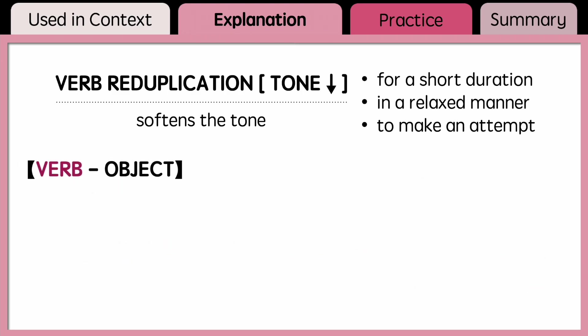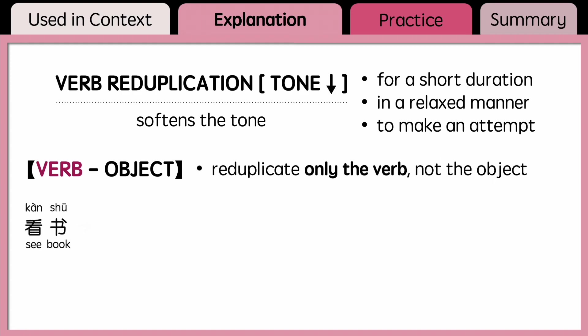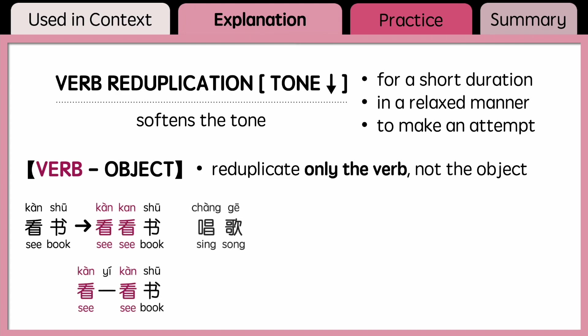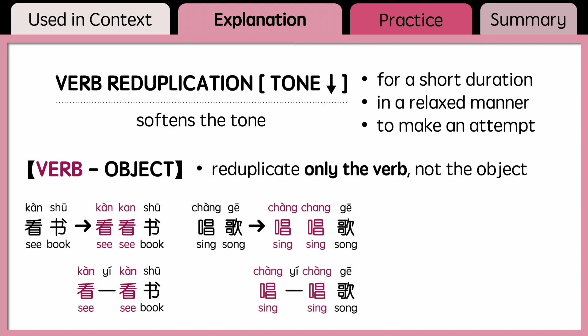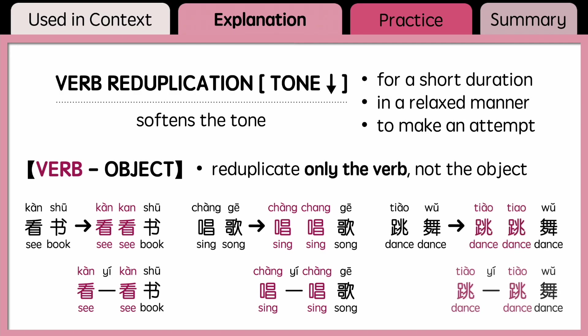This also applies to verb-object compounds. Since they usually have one-syllable verbs, make sure to reduplicate only the verb part, not the object part. For example, 看书 becomes 看看书 or 看一看书. 唱歌 becomes 唱唱歌 or 唱一唱歌. If the action is completed, you can add 了 in between the two reduplicated verb parts and say 看了看书, 唱了唱歌, or 跳了跳舞.